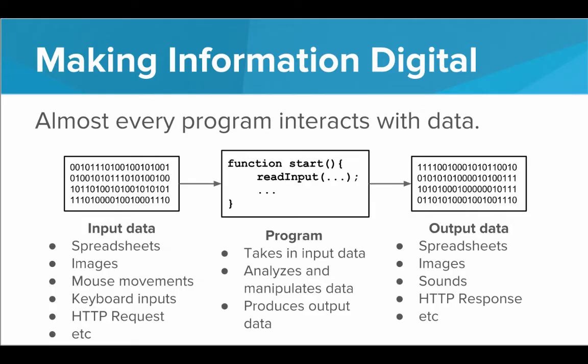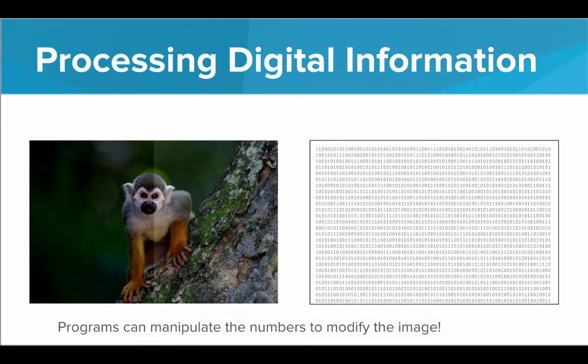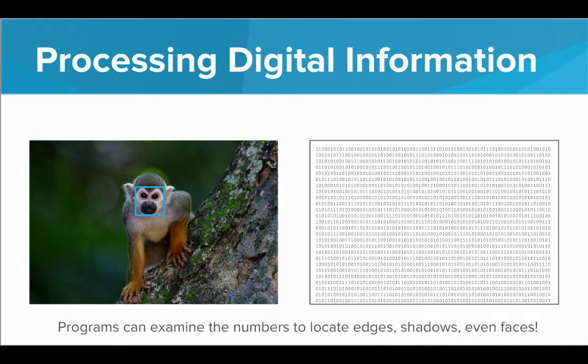So what are some examples of this? Well, you could have a program that processes an image. It takes in this image as input data, reads over the numbers, and manipulates them a little bit to make the image brighter. Or there's even programs that will analyze these numbers and locate things inside the image. Locate things like edges or shadows or even faces. There are algorithms that can take a series of numbers that are representing an image and locate faces. So these are just some cool things we can do with digital data.